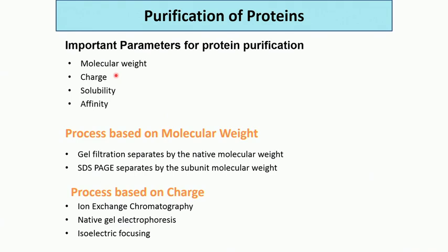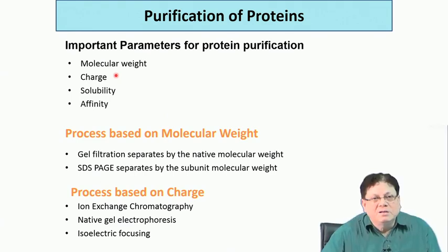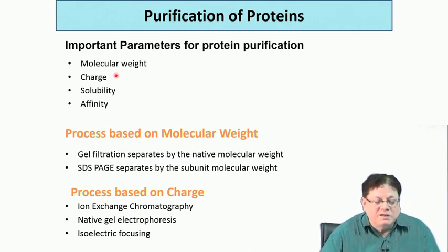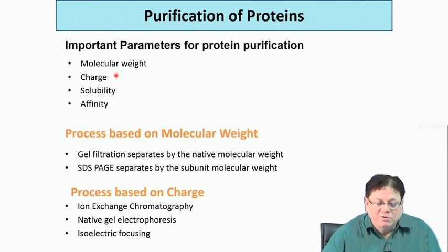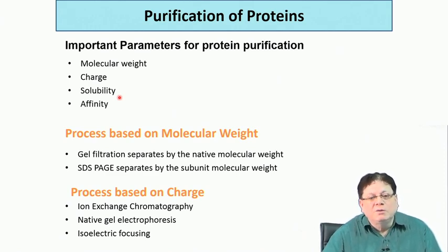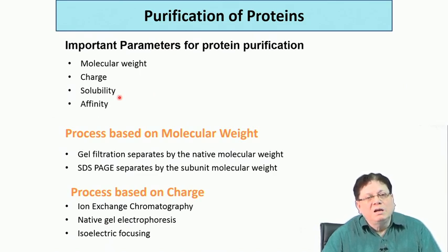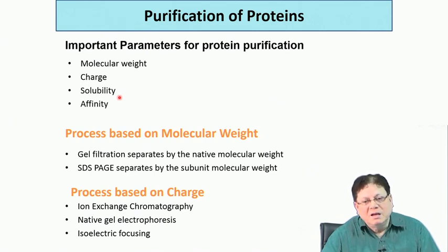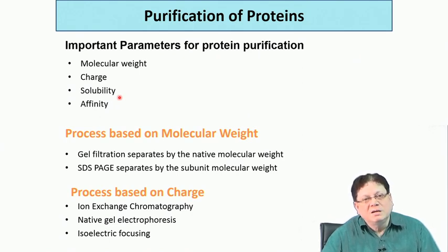The overall charge depends on the primary sequence of amino acids, and different proteins have different charges — that can be utilized to separate via electrophoresis. Different proteins also have different solubility. The solubility of proteins in water will decrease as you add inorganic salts which increase the ionic strength of the solution. There are precipitation methods like adding ammonium sulfate, which can precipitate proteins, and you can maintain different concentrations of ammonium sulfate to specifically precipitate various proteins.